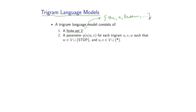The second part of a language model is a set of parameters. For every sequence of three words u, v, w — referred to as a trigram — we have a parameter q(w | u, v). Here w could be any element of V or the stop symbol, and u and v could be any element of V in addition to the special start symbols we saw in a second-order Markov process.